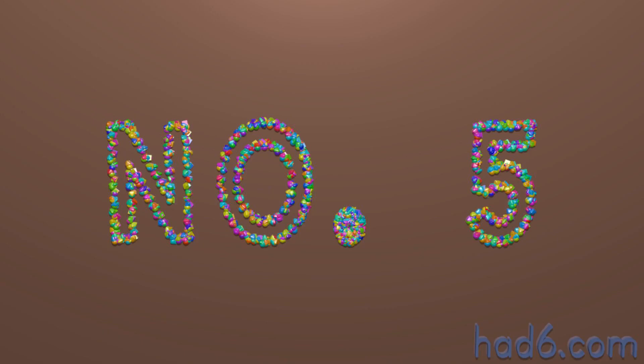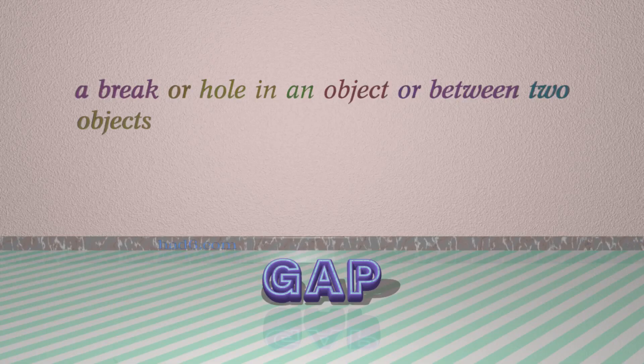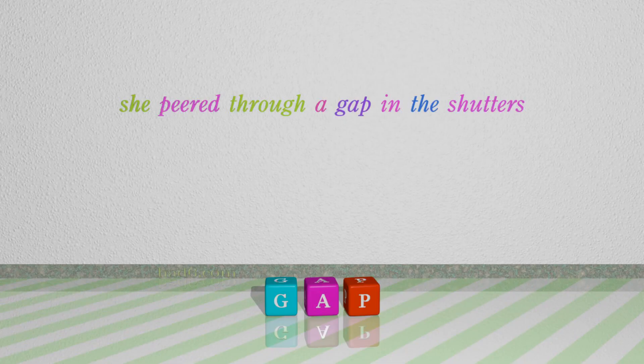Number 5: Gap. Which means a break or hole in an object or between two objects. For example: she peered through a gap in the shutters.